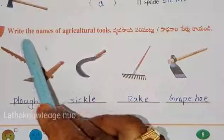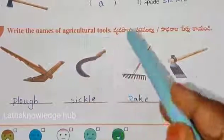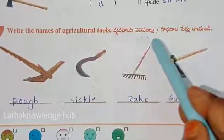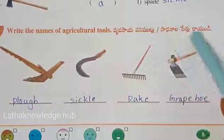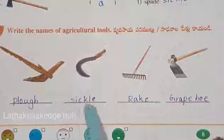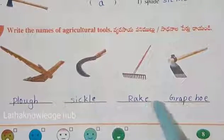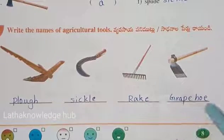Write the names of agriculture tools. The tools are: plough, sickle, rake, and grape hoe.